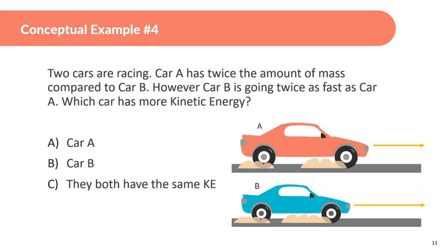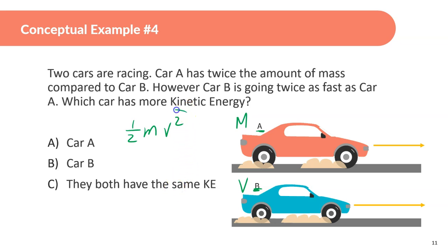Two cars are racing. Car A has twice the mass of Car B, but Car B is going twice as fast as Car A. You might think they'd have equal KE, but since velocity is squared in KE = ½mv², doubling velocity has four times the effect. Car B has more kinetic energy because of the squared term.